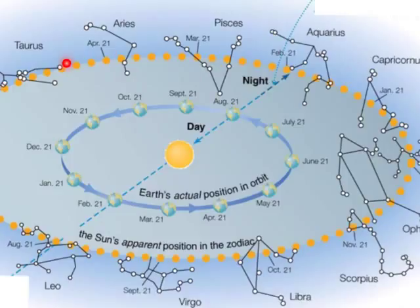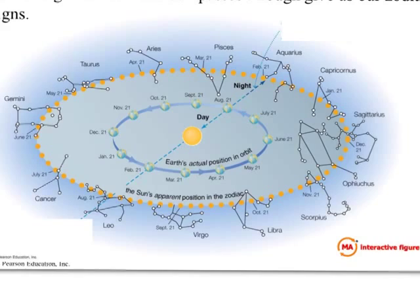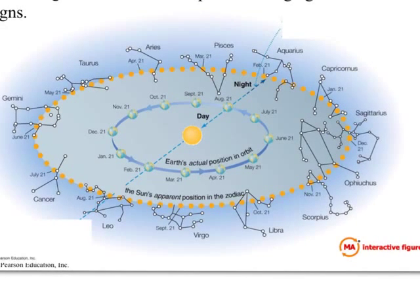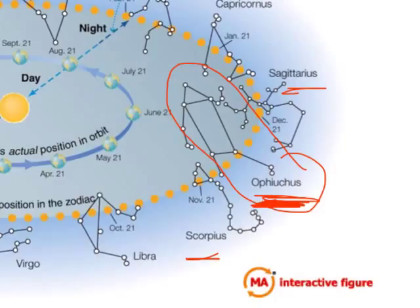I'm going to show you a table of these 12 signs of the zodiac. It's actually missing one — Ophiuchus. Ophiuchus should be between Scorpius and Sagittarius. It's the 13th constellation that the sun passes through, and I think it got left out of the zodiac constellations just because it was maybe kind of inconvenient.